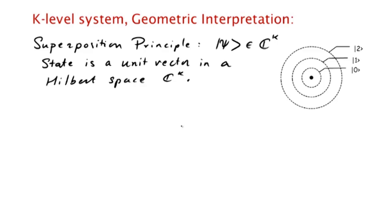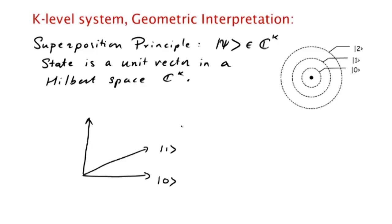So we have a k-dimensional complex vector space which has an orthonormal basis consisting of the states |0⟩, |1⟩, |2⟩, through |k−1⟩, and the state |ψ⟩ is a unit vector.